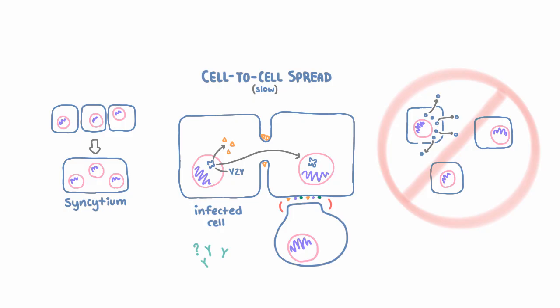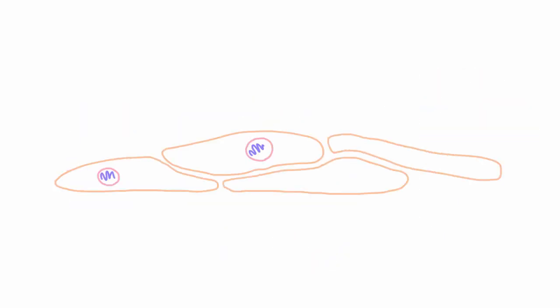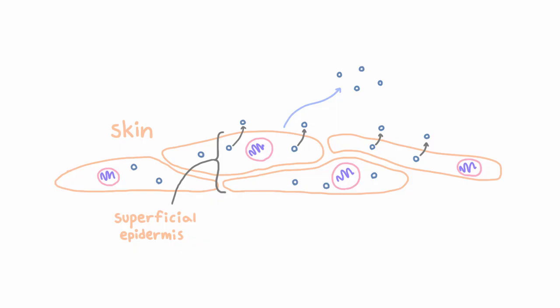But now, if you've been paying really close attention, you might have an objection. If VZV is always intracellular, then how can it possibly aerosolize from skin lesions? Well, it turns out the superficial epidermis, the outermost part of the skin, is the one exception to the rule. It's the one place where the virus actually is released from cells and can float around freely through the air. And that's precisely why people get infected via skin lesions of others.